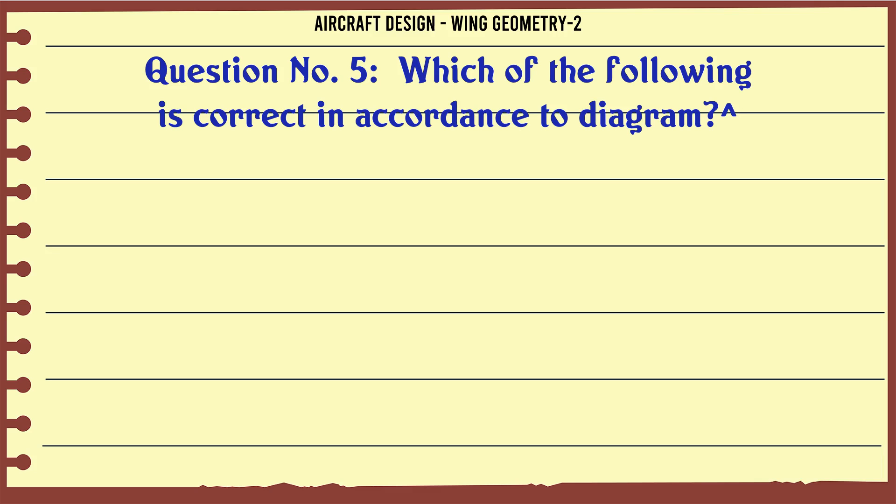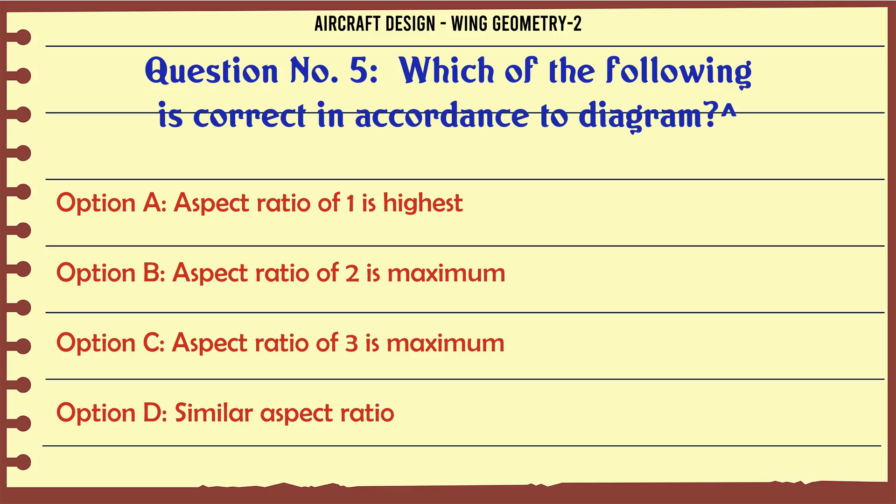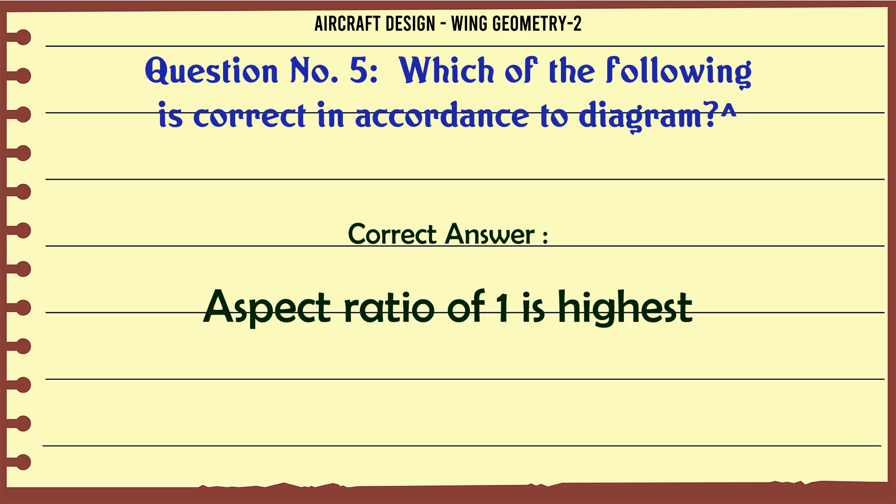Which of the following is correct in accordance to diagram? A: Aspect ratio of 1 is highest. B: Aspect ratio of 2 is maximum. C: Aspect ratio of 3 is maximum. D: Similar aspect ratio. The correct answer is aspect ratio of 1 is highest.